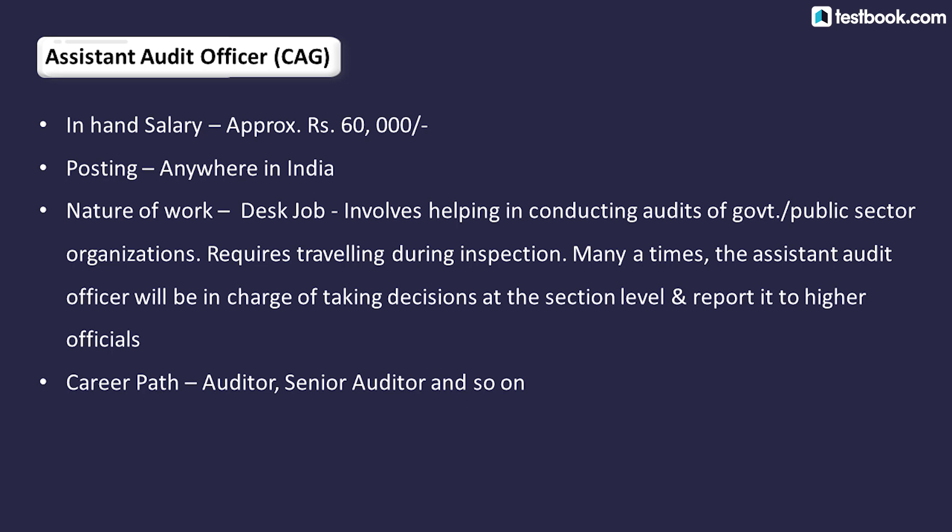The Assistant Audit Officer post is a Gazetted post. The department is called the CAG department. The salary will be above 65,000 because the posting is always in capital cities, and when you add allowances, the salary automatically goes above 65,000. The work profile involves auditing the accounts of central and state governments — it is a decent desk job.